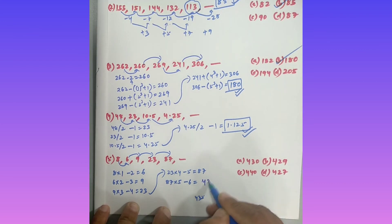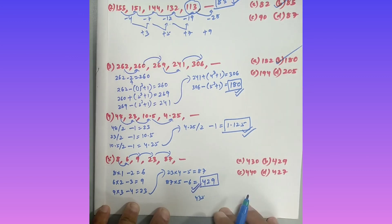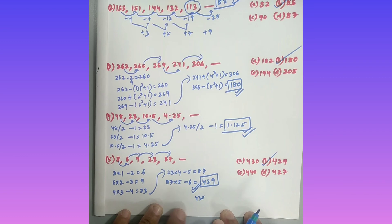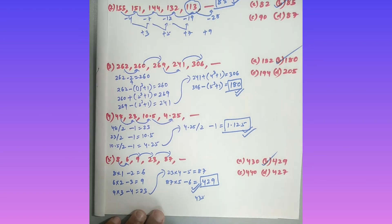So 429 is your answer. In this way, you have to solve the number series in 5 seconds. Thank you very much, students.